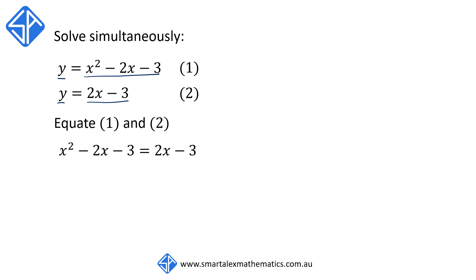This gives us a quadratic equation. So to solve this equation, we need to make the right-hand side equal to 0. We're going to subtract 2x from both sides. This is going to get rid of the 2x on the right. We're also going to add 3 to both sides as well. This is going to get rid of the negative 3 on the right, so that on the right-hand side, we have 0. Now, simplifying the left-hand side, we're going to get x squared minus 4x equals 0.